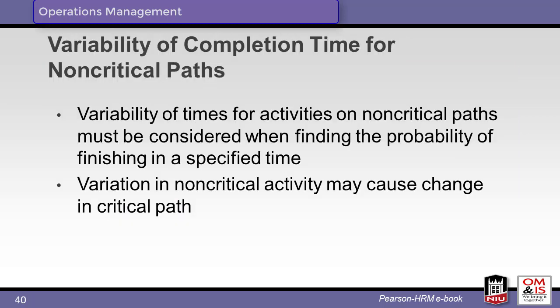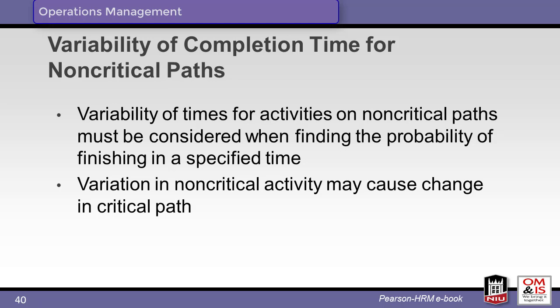So far, we have focused on the activities on the critical path. However, variability affects activities not on the critical path, and we must pay attention to those activities as their variability may put them on the critical path. Here's a summary of our analysis of the project so far. We have defined the expected completion time and the probability of success given an extra week. We have identified those activities on and off of the critical path and created a detailed schedule.